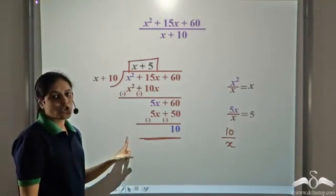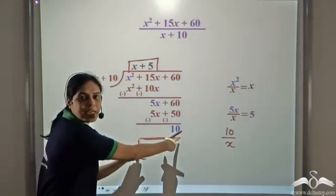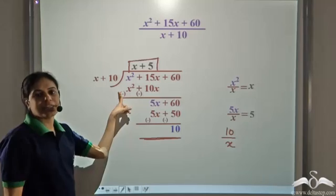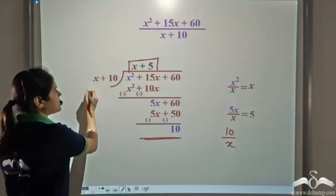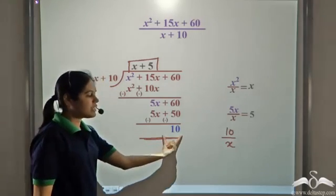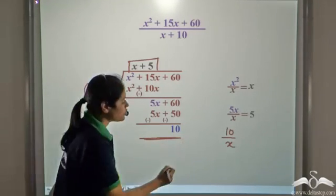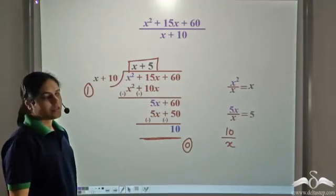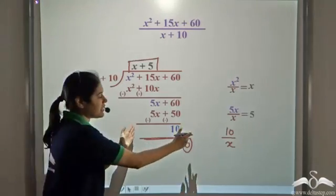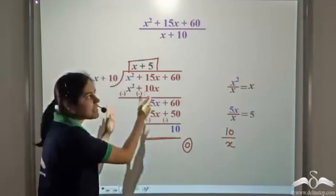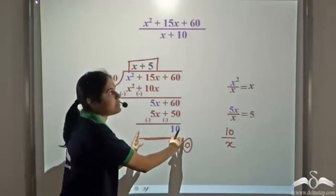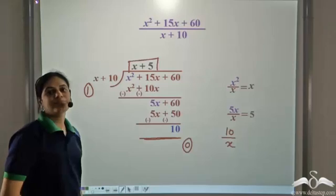So 10 is the remainder and x plus 5 is the quotient of this division. In general, we stop when the degree of what remains is less than the degree of the divisor. The degree of the divisor is 1, while the degree of the remainder 10 is 0. Since 0 is less than 1, we stop. This remaining part is the remainder, and x plus 5 is the quotient.